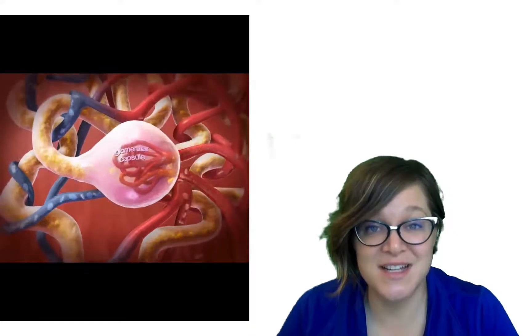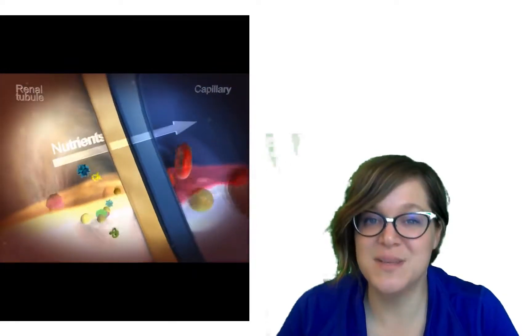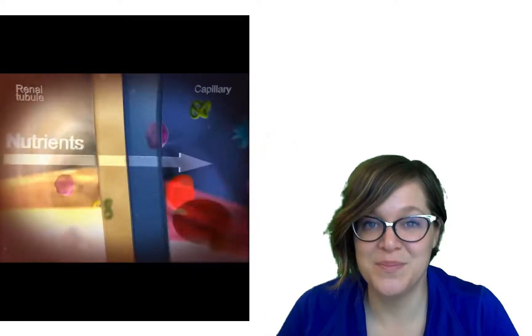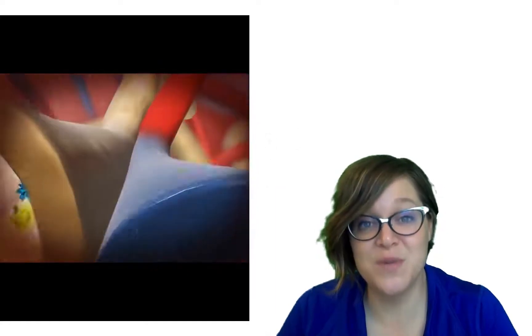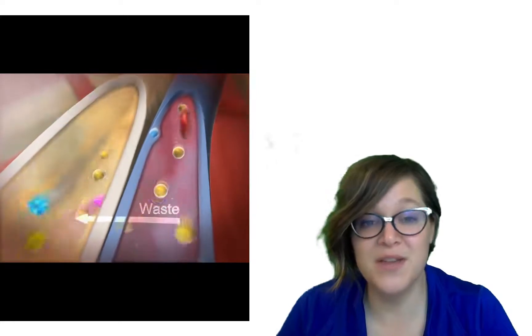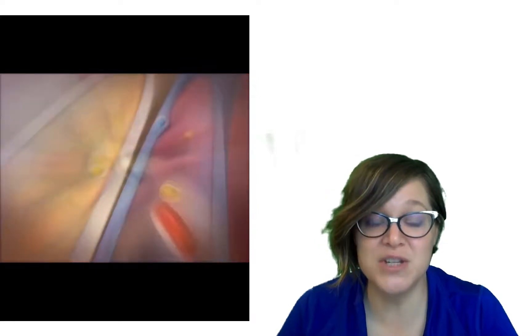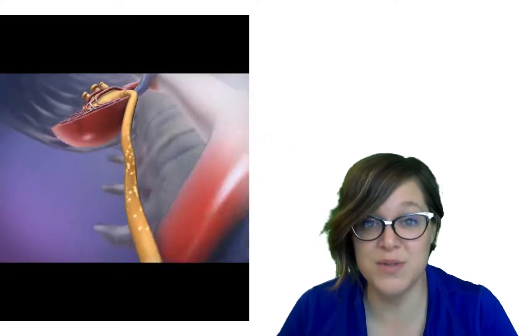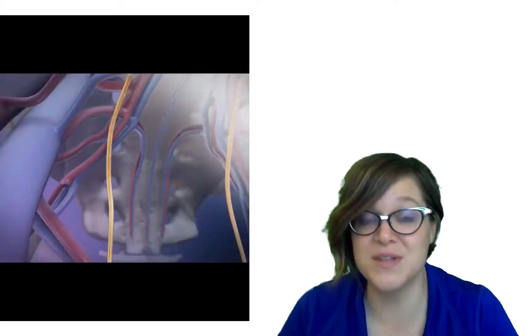Anything that makes it all the way through that nephron and all the way through that collecting duct is going to get emptied into that renal papilla and head on its way to the bladder. So hopefully now you've got a better understanding of how urine is formed. We're going to talk a little bit more in another video about how that formation of urine can be modified by hormones or various physiological disorders such as diabetes.